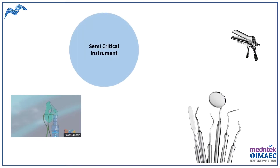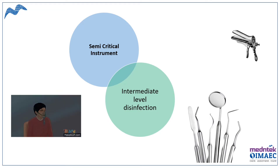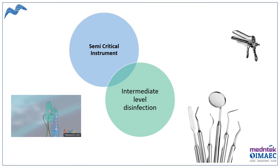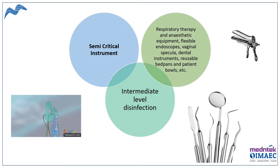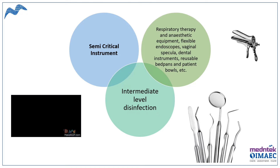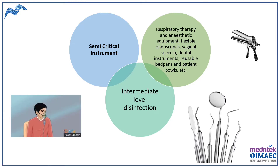Semi-critical instruments require intermediate to high level of disinfection depending upon their use. As these instruments come in contact with only the mucous membrane, intermediate to high level of disinfection is sufficient. Examples of semi-critical instruments include respiratory therapy and anesthetic equipment, flexible endoscopes, vaginal specula, dental instruments used only for opening of the mouth, and reusable bedpans and patient bowls.